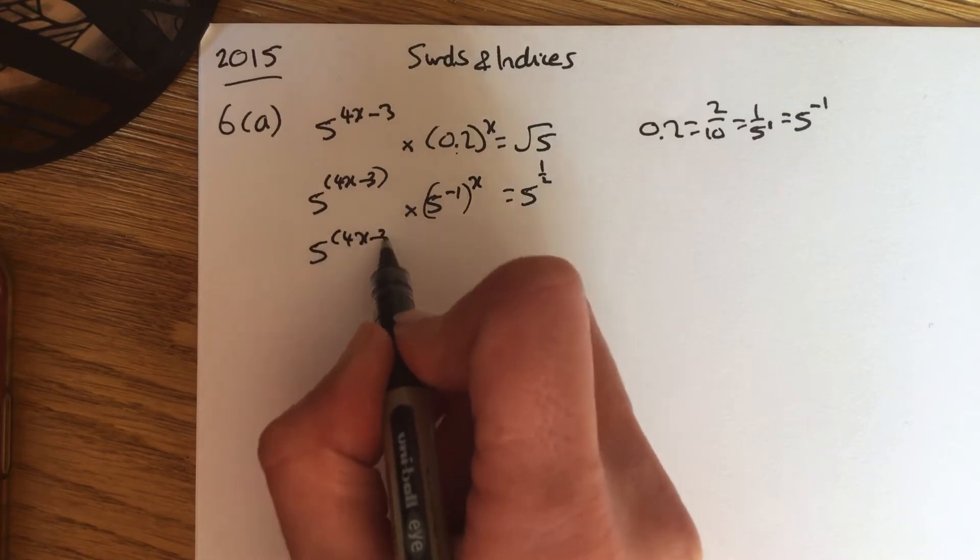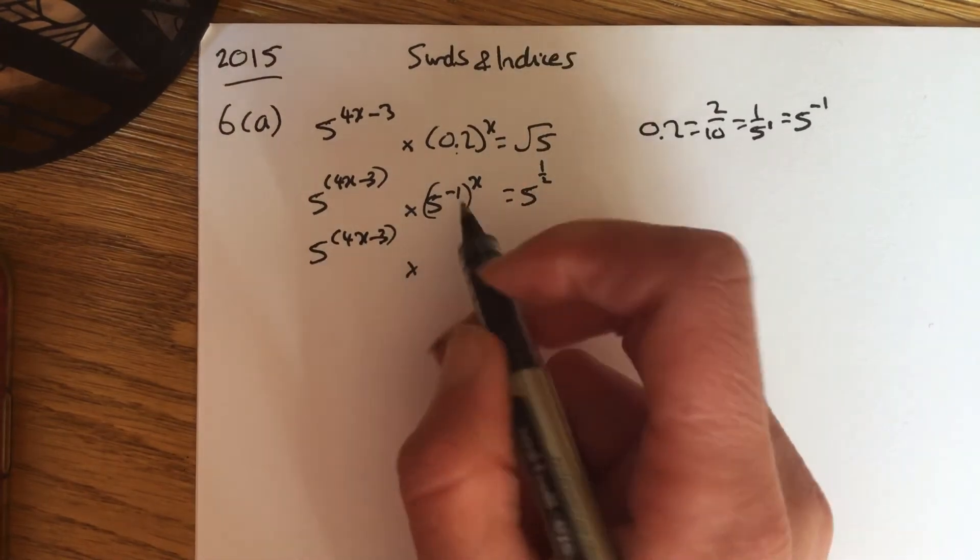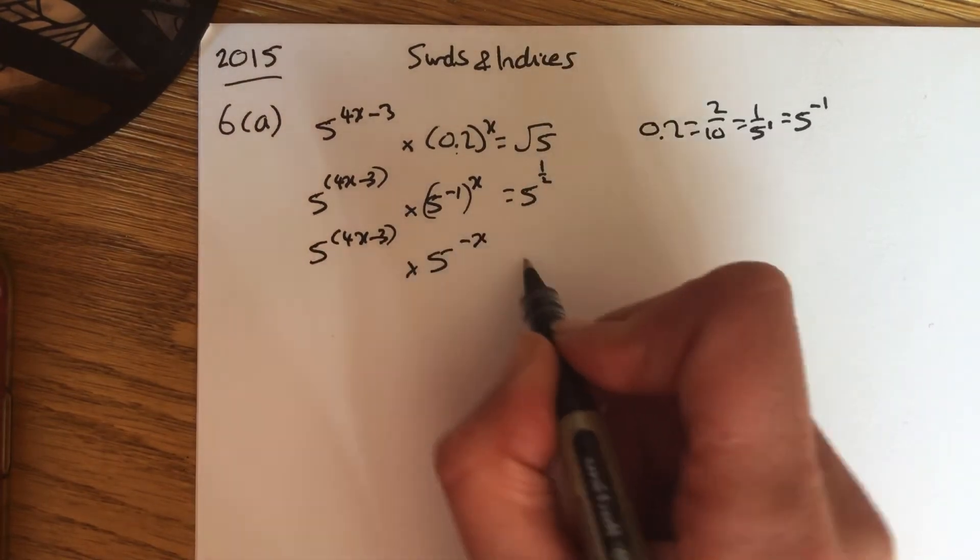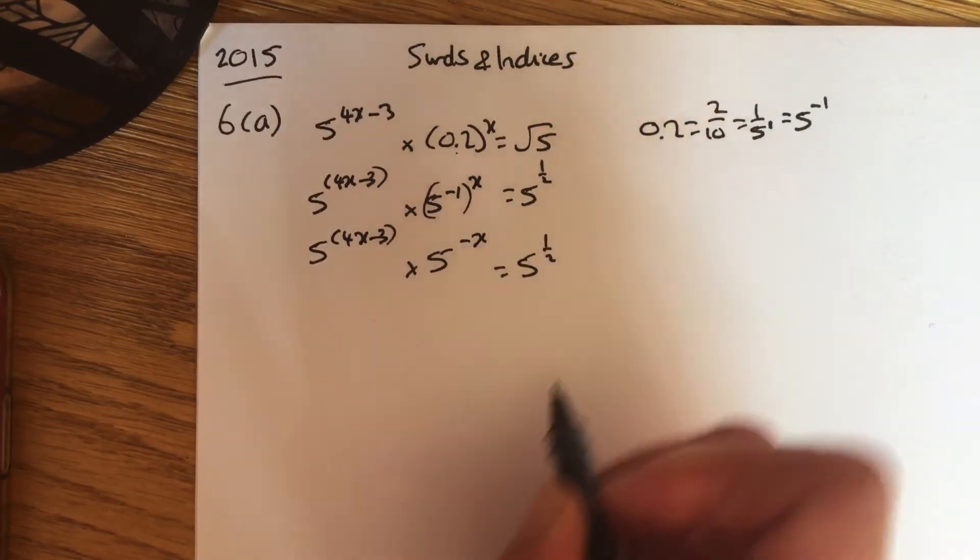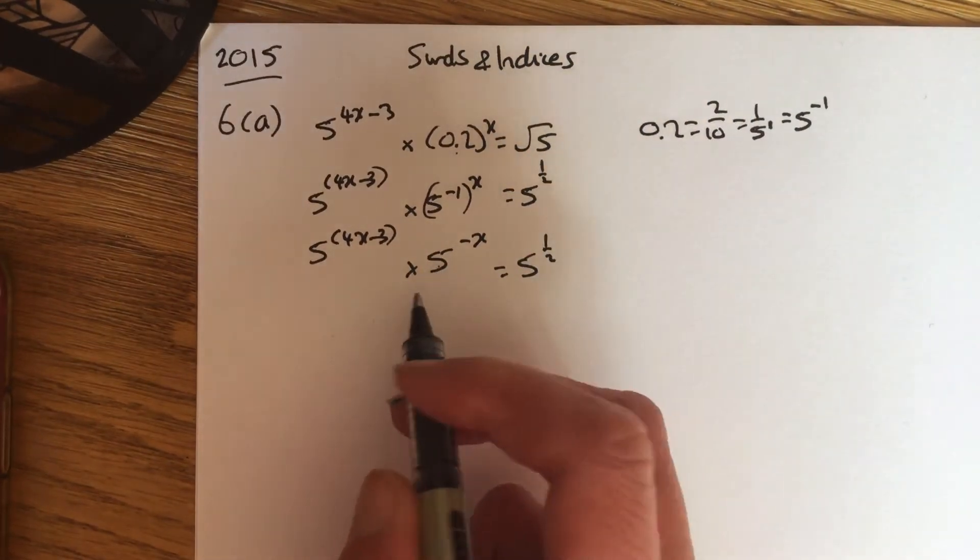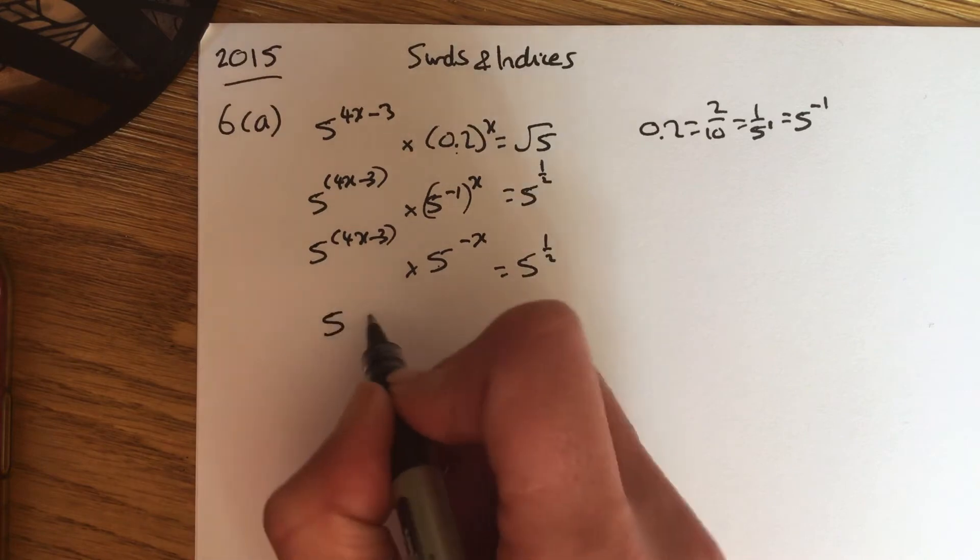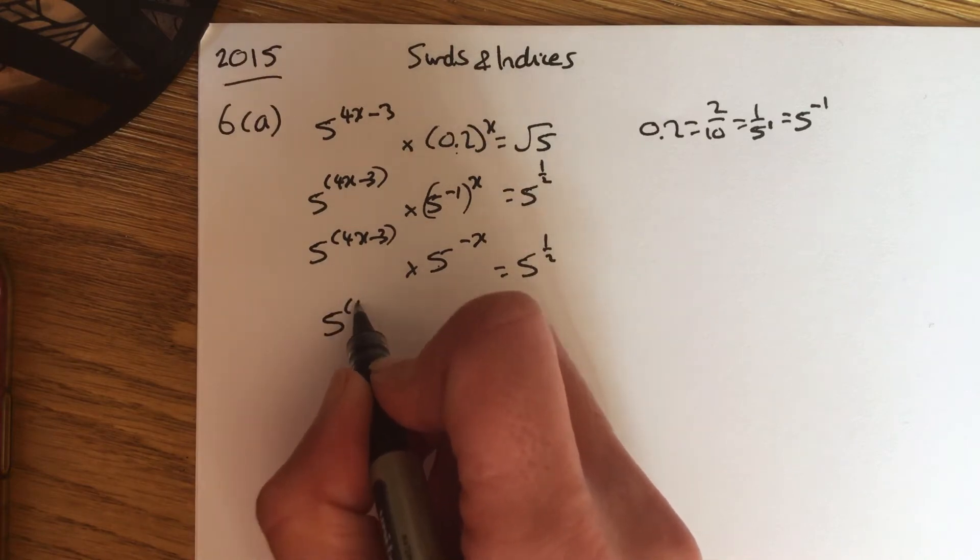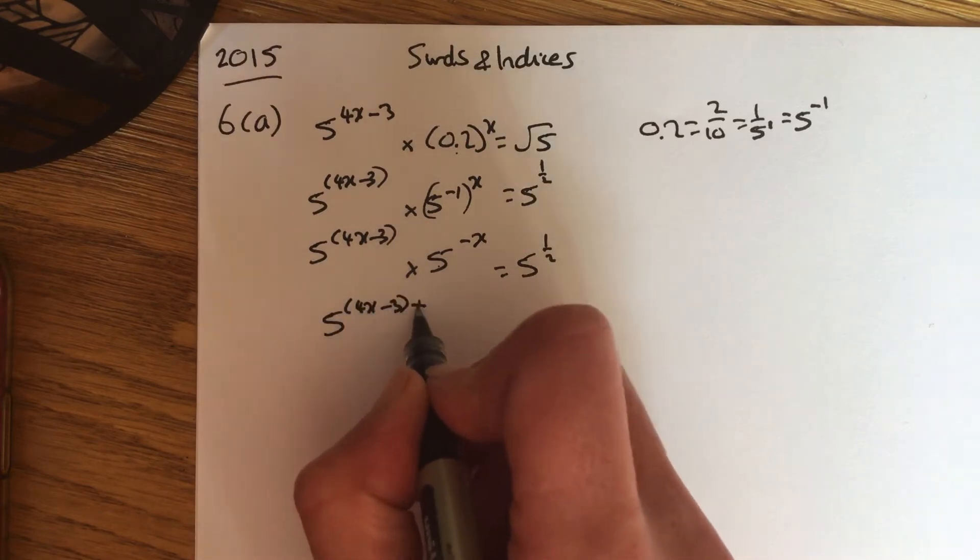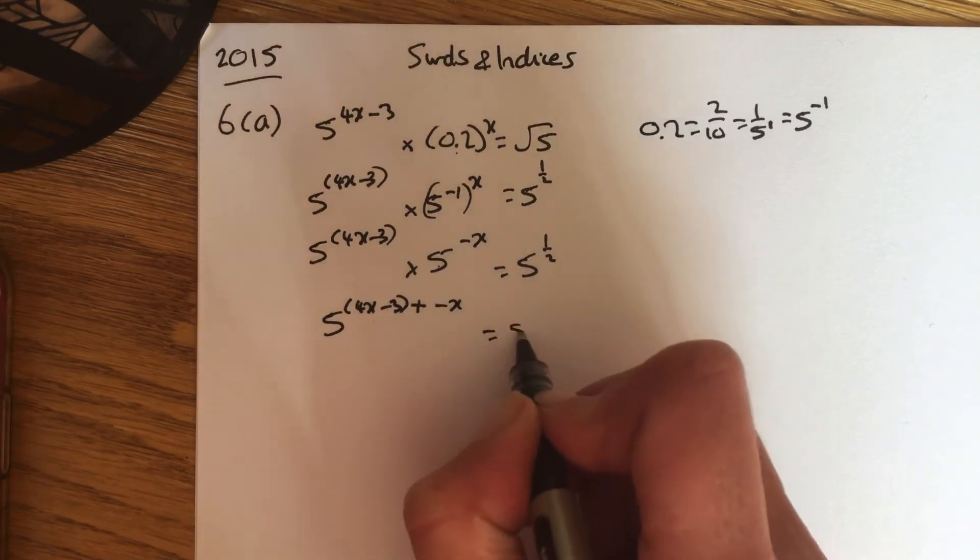Just keep the brackets around this one for the time being. Power to power means multiply, so it's minus 1x, and 5 to the half. When you're multiplying numbers, you can add the powers. So that's the same as 5 to the 4x minus 3 plus minus x equals 5 to the half.